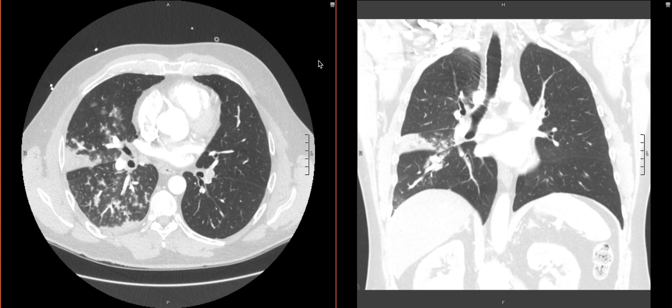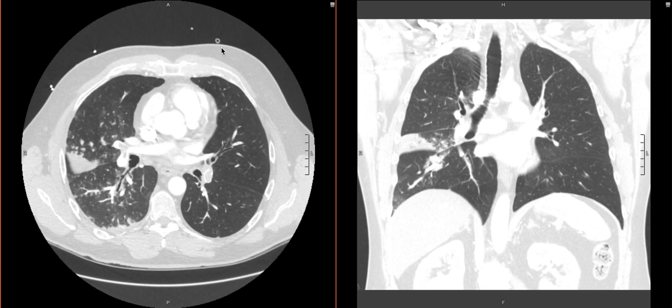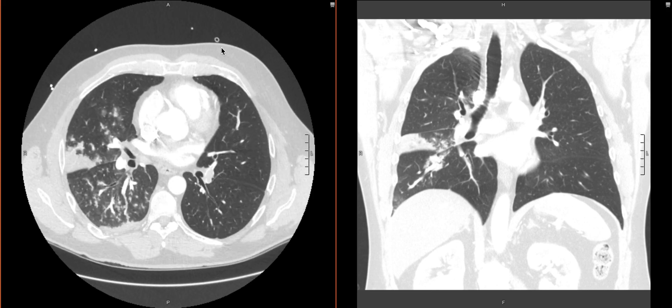When evaluating for pulmonary emboli and detecting them, it's important to also look at the lungs. Obviously you'll do this as part of your search pattern on a CT scan of the chest — you must always look at the lung parenchyma. Especially in patients who have a confirmed pulmonary embolus, you want to make sure that you interpret some of the opacities you may be seeing appropriately.